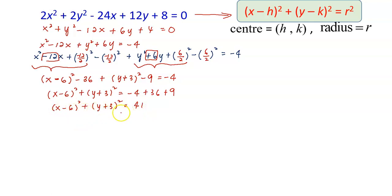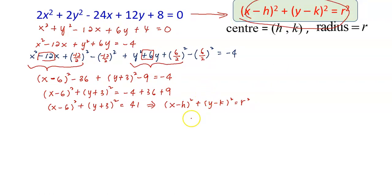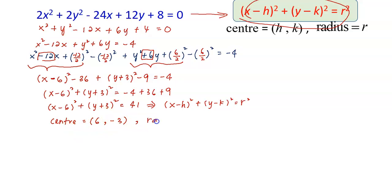After converting into this standard form, we compare it to the general standard form of the circle equation. It is now very easy to determine the center and the radius. The center is obtained by changing the sign of the values inside the brackets: the x value is −6, so we get 6; and the y value is +3, so we get −3. The center is (6, −3). For the radius, the right-hand side 41 corresponds to r², so the radius is √41.